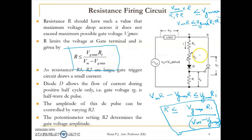Since resistances R1 and R2 are large, the gate trigger circuit draws a small current. The diode D allows current flow during the positive half cycle only, avoiding negative gate voltage. The amplitude of the signal fed to the gate circuit can be controlled with the help of R2, as it is variable. The potentiometer setting of R2 determines the gate voltage amplitude.